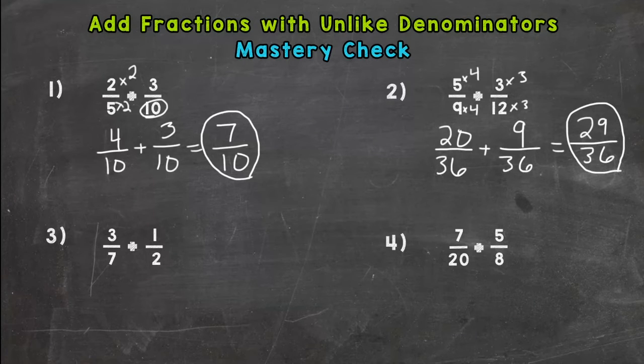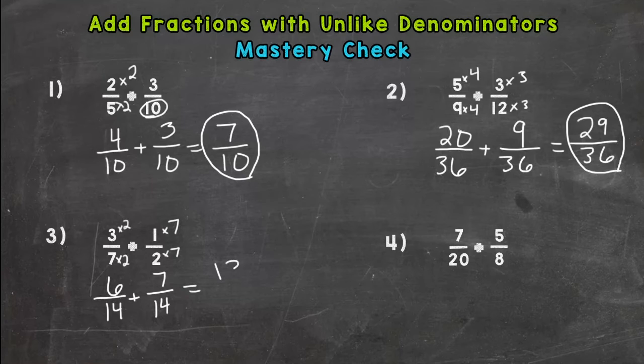Number three, a seven and a two, common factor is 14. Seven times two is 14, so we need to do that to the top. Three times two is six. Two times seven is 14. We need to do it to the top. One times seven is seven. Add these together and we get 13 fourteenths. This one cannot be simplified either, so we are done. 13 fourteenths.